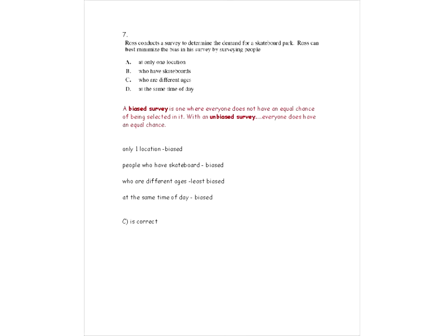Question 7 is about survey bias. A biased survey is one where not everyone has an equal chance of being selected. For example, if you're polling Canadians but only ask people aged 20 to 25, that's a biased survey — it doesn't represent everybody. With an unbiased survey, everyone has an equal chance. The question asks: Ross conducts a survey to determine demand for a skateboard park. How can he best minimize bias in his survey?